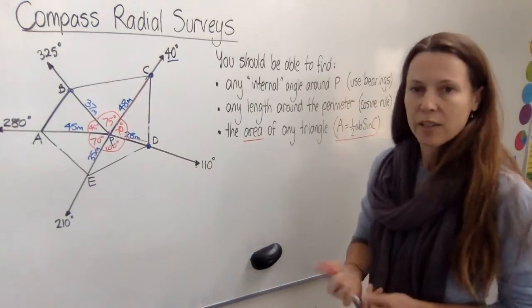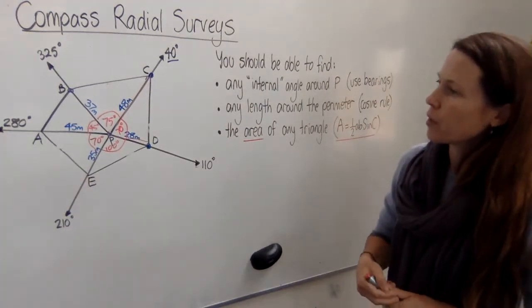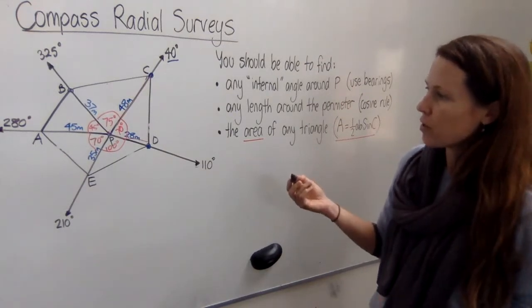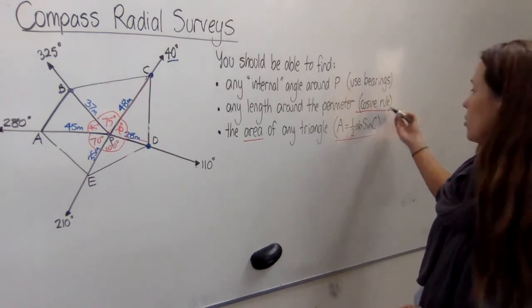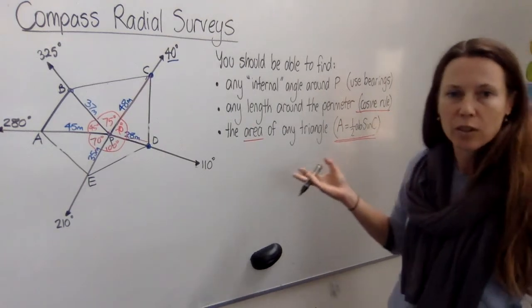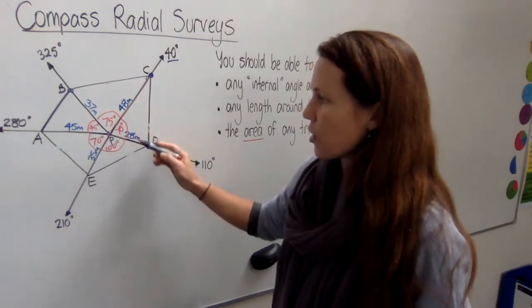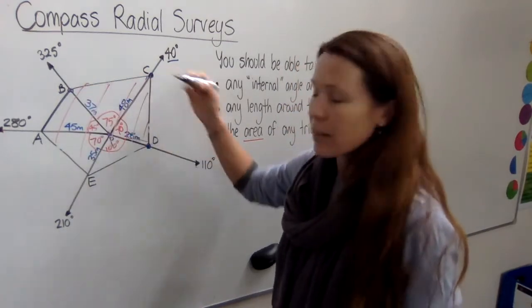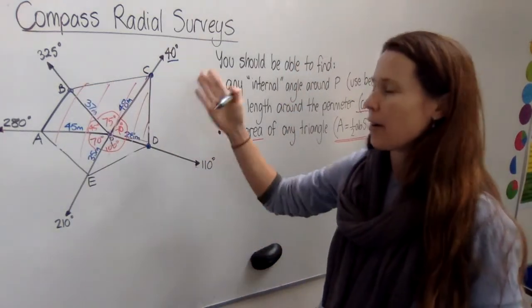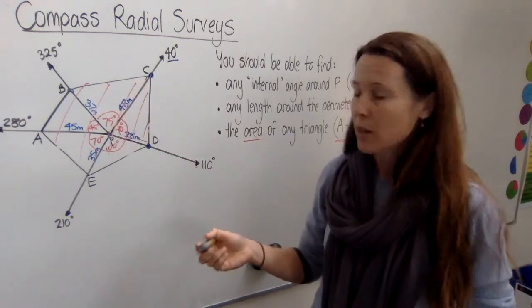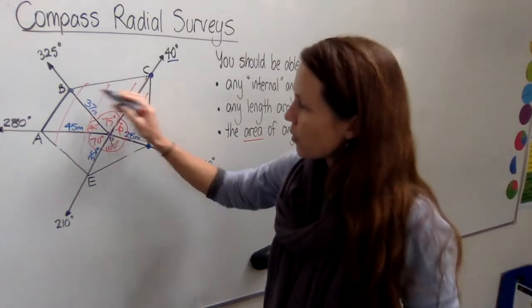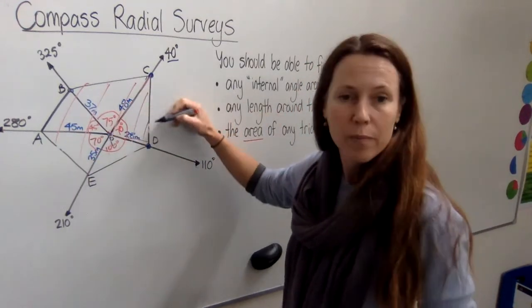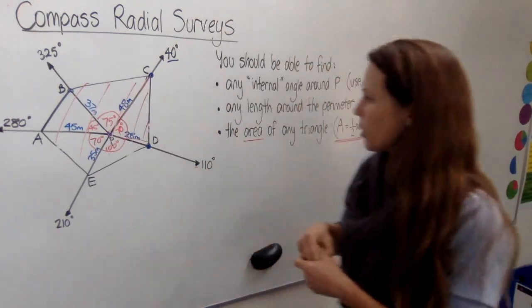So in an HSC question, how would they give this to you? Well what they'd be trying to examine, I suppose, if you get an HSC question on a compass radial survey, they want to check whether you can use the cosine rule and whether you can use that area triangle rule. Now in a complicated one like this where you'd have to use it five times, they're unlikely to give you a question where you have to apply it over and over again and get the same thing five times. So you'll probably get questions where you're given a bunch of information and maybe just need to apply these rules to figure out say one of those triangles.